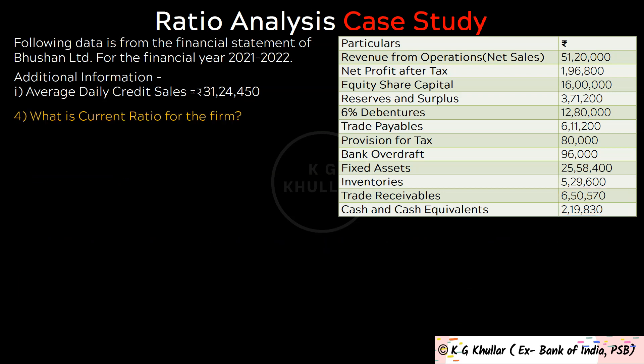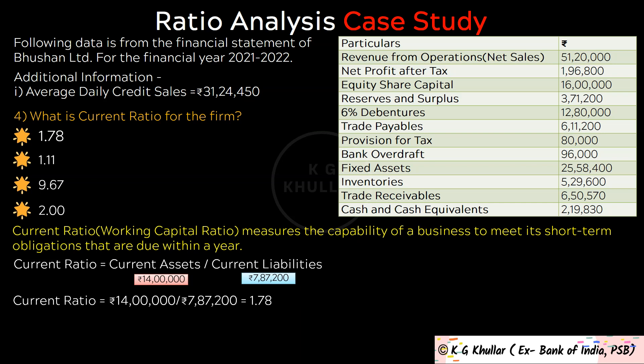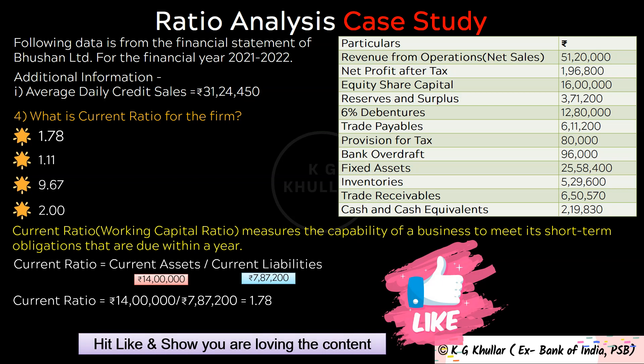The next question is: What is current ratio for the firm? The current ratio, also known as working capital ratio, measures the capability of the business to meet its short-term obligations due within a year. It is calculated as current assets divided by current liabilities. Using previously found values: Rs. 14,00,000 divided by Rs. 7,87,200 equals 1.78. The correct option is option A.